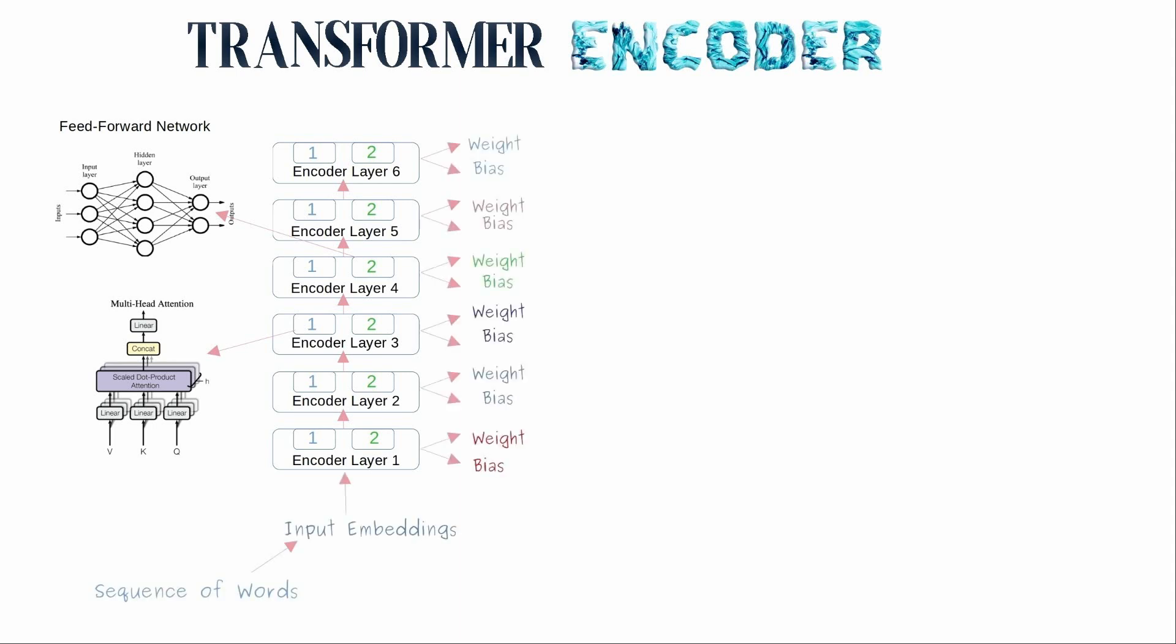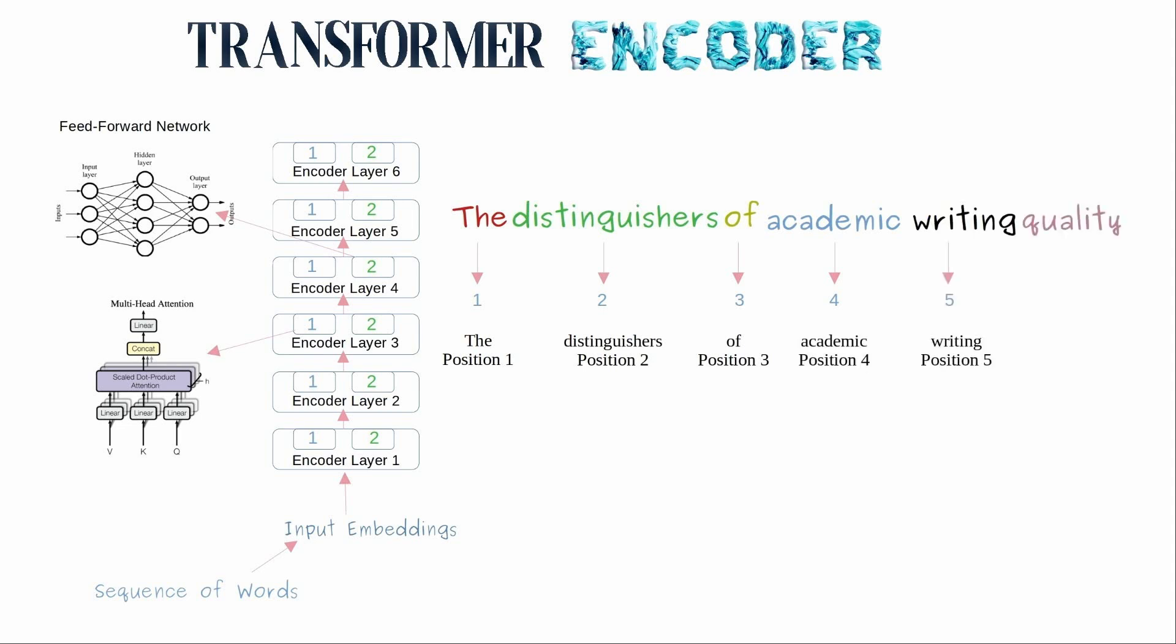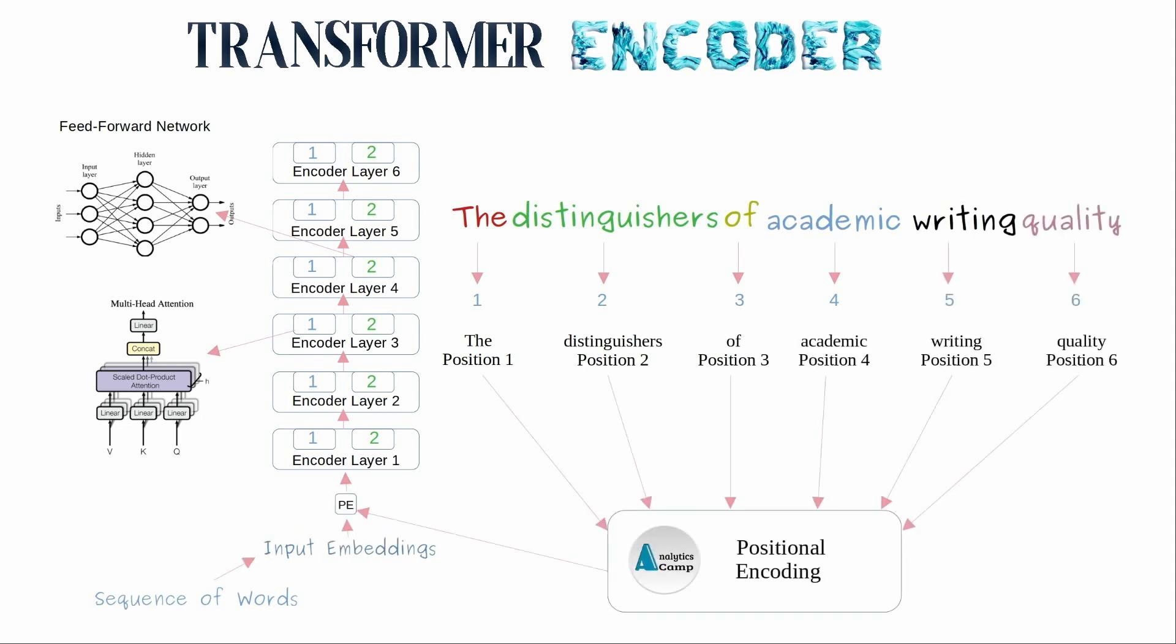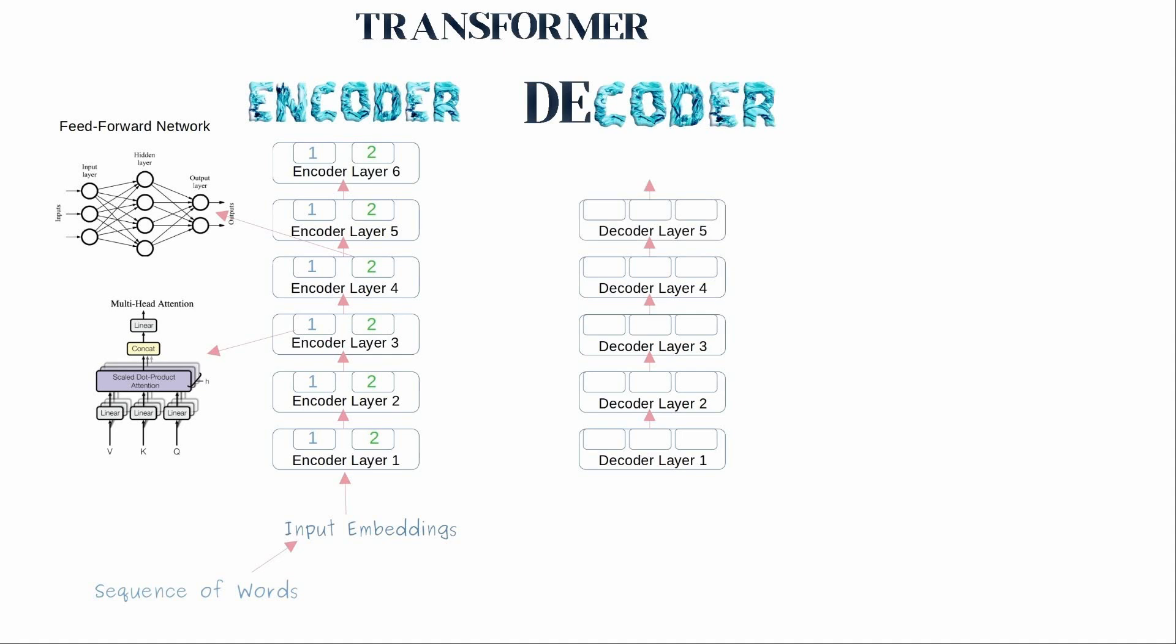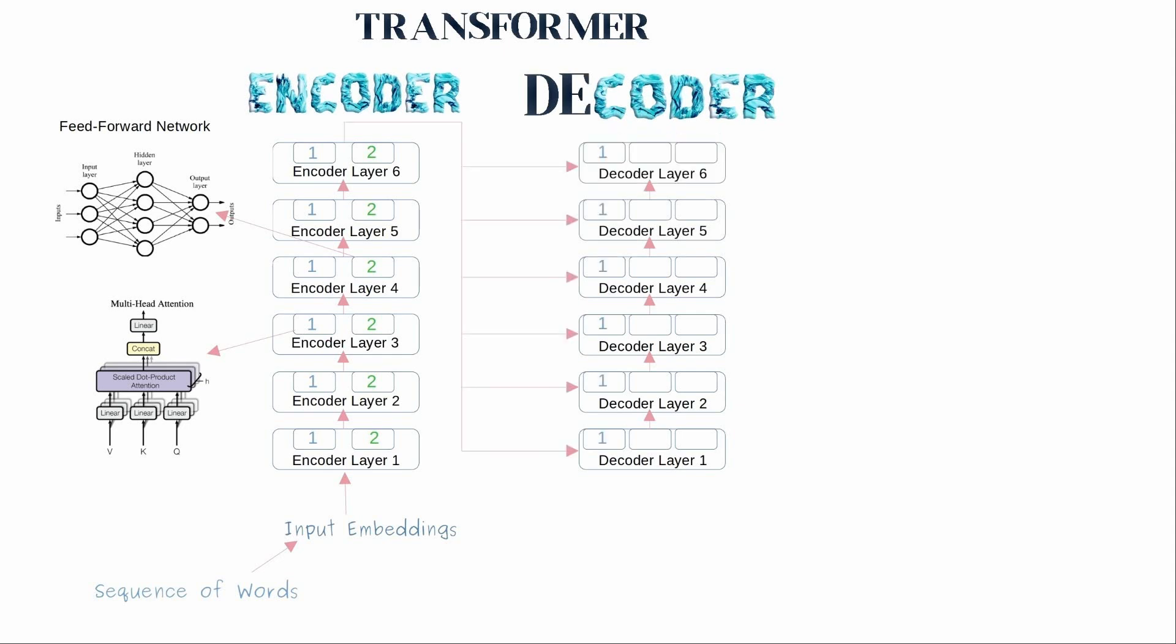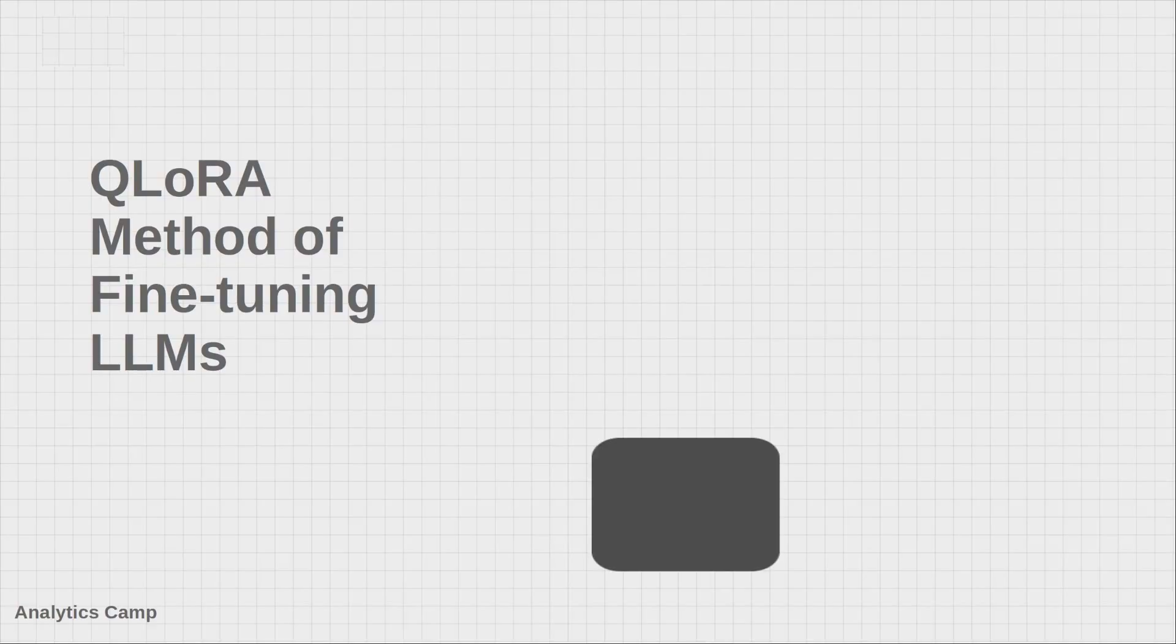I have a longer video explaining the Transformer language model based on this paper. Regardless, you still need to learn the main concepts of this paper, which are the attention mechanism, encoder-decoder models, and how word embeddings work in this architecture.